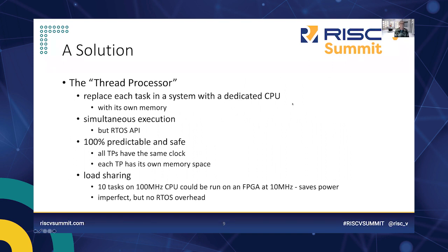The solution we want to talk about is the concept of a thread processor. The idea is simple: we have a multi-tasking application written as if on an RTOS. We simply give each task its own dedicated CPU, probably with its own memory. All these processors run simultaneously — which is what we simulate with an OS, but now they actually run simultaneously. The API looks just like an RTOS. This architecture provides 100% predictability because all thread processors can share the same clock, running in lockstep so you know the exact temporal state of the entire system. Each has its own memory space for protection.